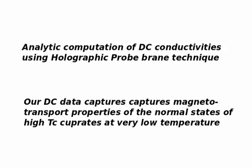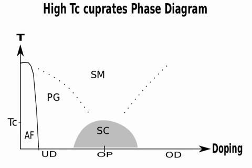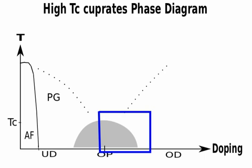Surprisingly, our DC data captures several important magnetotransport properties of high-Tc cuprates at very low temperature. This is a simplified version of the cuprate phase diagram in terms of temperature and chemical doping. We would like to concentrate on this blue region stretching from optimal doping to overdoped sides at very low temperature. We consider DC conductivities because of their clear and universal behaviors. Suitable materials are LSCO and TBCO.